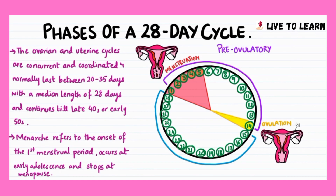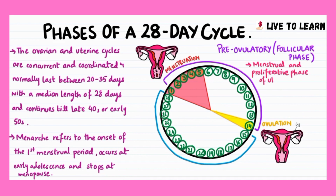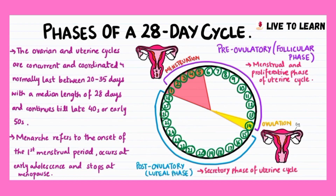There are usually 14 days leading up to ovulation, known as the pre-ovulatory period or follicular phase, which corresponds to the menstrual and proliferative phases of the uterine cycle. The 14 days following ovulation comprise the post-ovulatory period or luteal phase, which corresponds to the secretory phase of the uterine cycle.